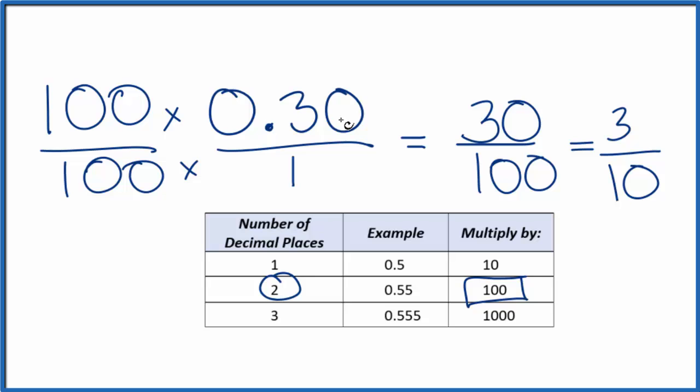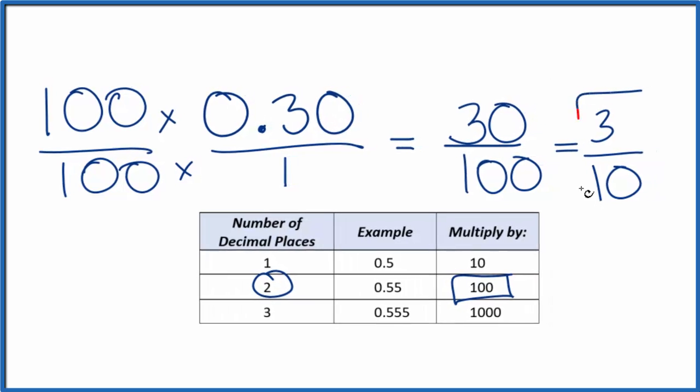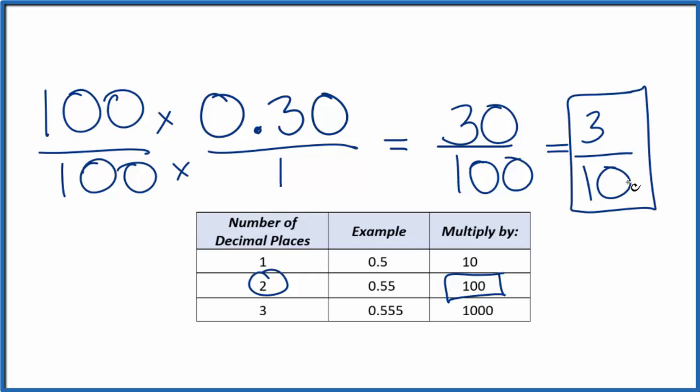So 0.30, the decimal, that equals the fraction 3 tenths. If you divide 3 by 10, you'll get 0.30.